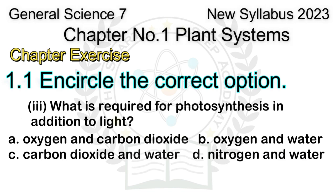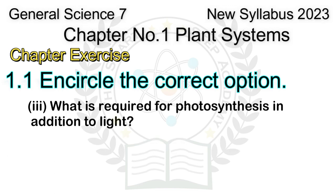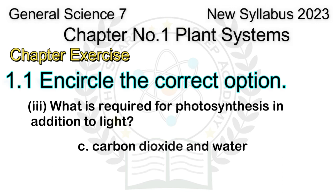Question 3: What is required for photosynthesis in addition to light? A. Oxygen and carbon dioxide, B. Oxygen and water, C. Carbon dioxide and water, D. Nitrogen and water. Answer: C. Carbon dioxide and water.